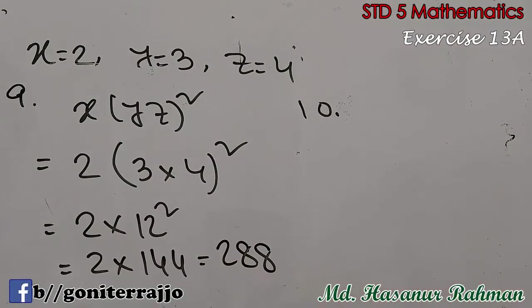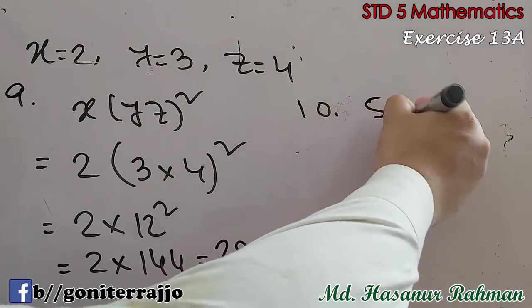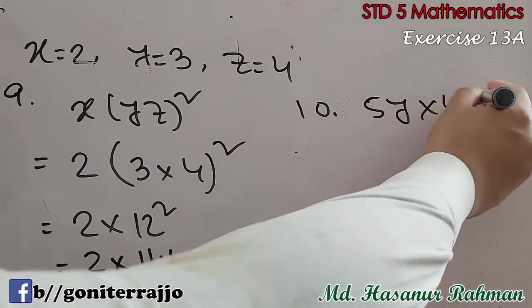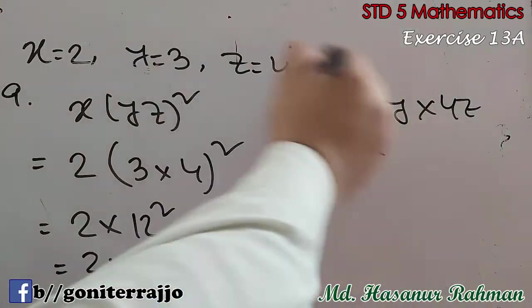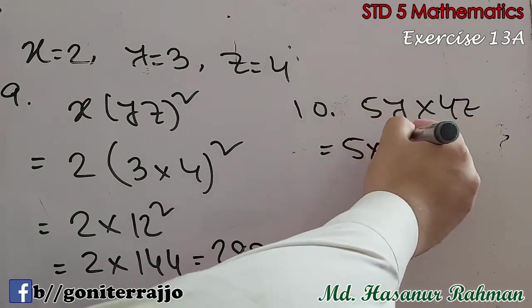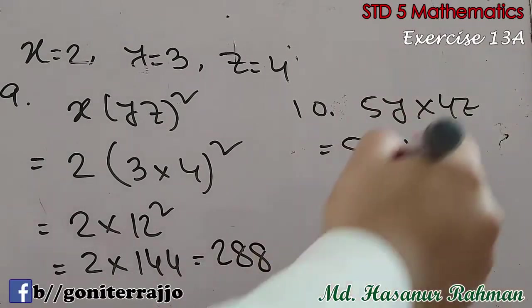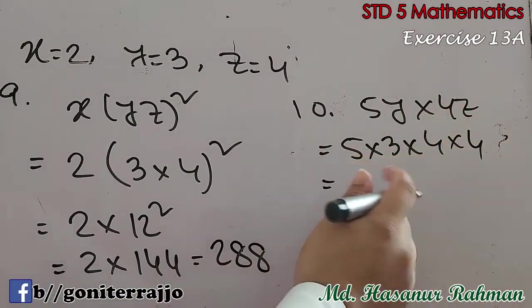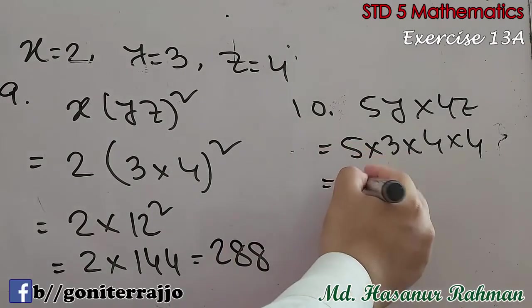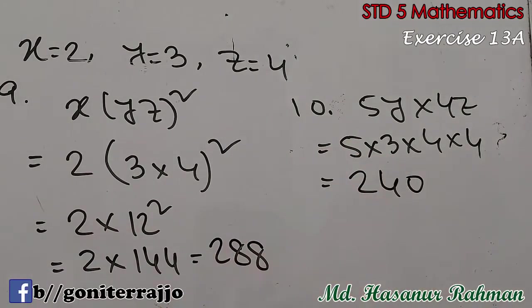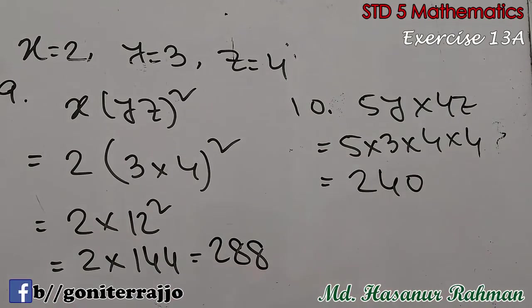Now number 10: 5y into 4z. So 5 into y means 3, into 4 into z means 4. So 5 times 3 is 15, times 4 is 60, times 4 is 240. So 240 will be the answer of number 10. Thank you very much for watching the class. See you soon. Allah Hafiz.